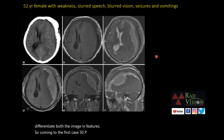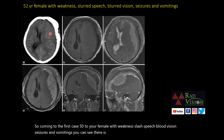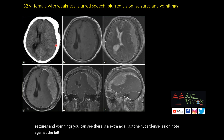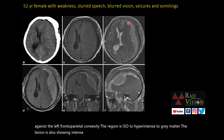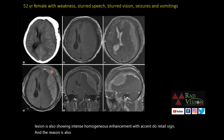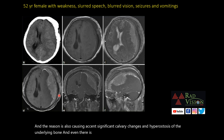Coming to the first case: a 52-year-old female with weakness, slurred speech, blurred vision, seizures, and vomiting. There is an extra-axial iso- to hyperdense lesion against the left frontoparietal convexity, iso- to hyperdense to grey matter, showing intense homogeneous enhancement with a dural tail sign. The lesion is also causing calvarial changes and hyperostosis of the underlying bone, with extra-cranial spread and significant soft tissue swelling.